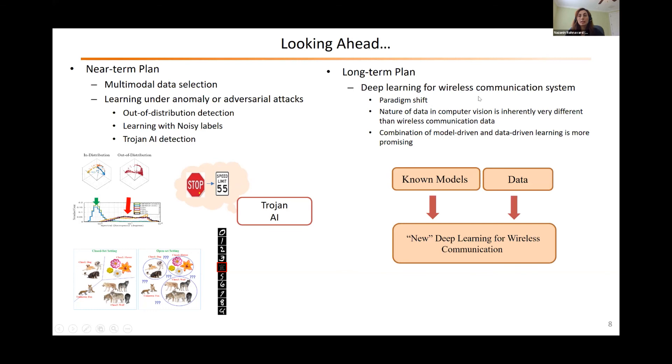And also as a long-term goal, I would like to apply deep learning for wireless communication systems. But we definitely need a paradigm shift. We cannot just transfer everything from computer vision to wireless communication because the nature of wireless communication signals is totally different. And we have to look at both data-driven and model-driven techniques to tackle this problem.